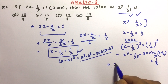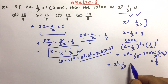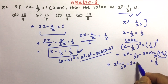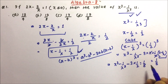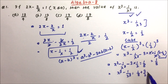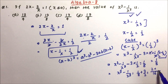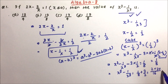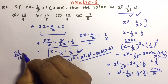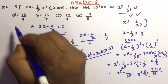Here x and 1/x get cancelled in the 3ab term. So x cube minus 1 by x cube minus 3 times (x minus 1/x), and x minus 1 by x is 1 by 2, equals 1 by 8. Therefore x cube minus 1 by x cube equals 1 by 8 plus 3 by 2. Taking LCM: 1 by 8 plus 12 by 8 gives 13 by 8... simplifying gives 13 by 4.